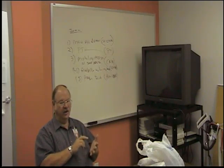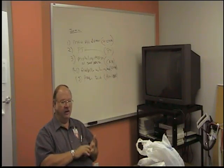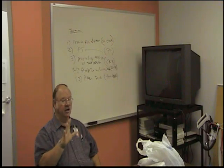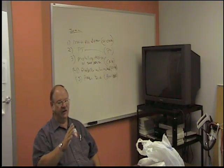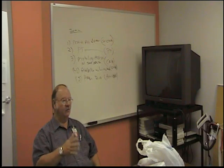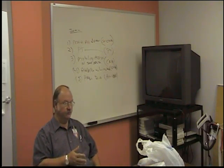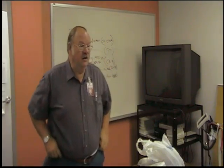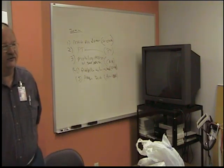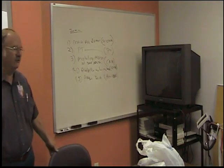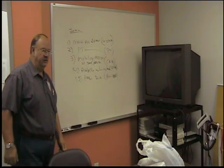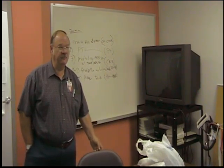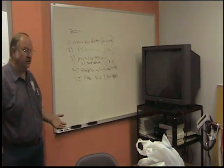We can't white it out. We can't scribble it out. We can't do nothing. All that we can do is just draw one line through it. We never want to give any indication that we are trying to hide something. When I worked in the lab, we'd do one line and you had to initialize it. What they used to have us do is write the word 'error' and initial it. But 'error' is an admission of guilt sometimes, so anymore I think what they're just doing is a line through it and initial it.